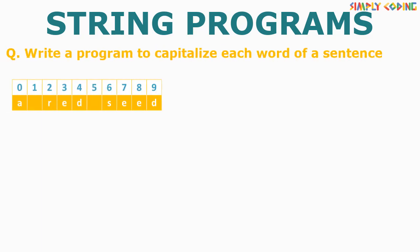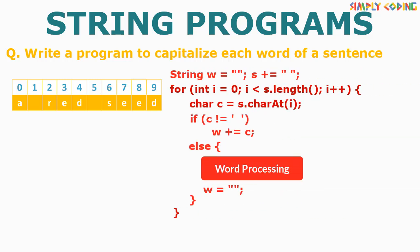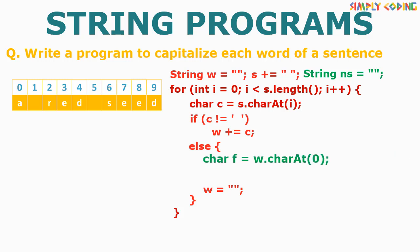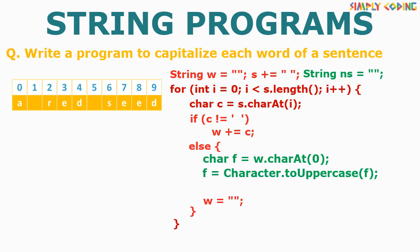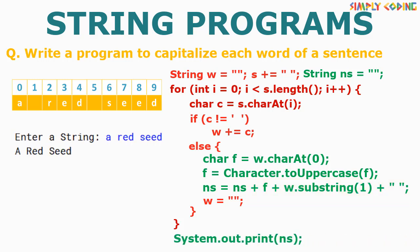The next program is to capitalize each word of the sentence. Here again we will take our template. We will declare a string variable before the loop. Inside the loop, we will first extract the first character of the word by using charAt(0) and convert it to uppercase. Then we will use the substring function to get the remaining part of the string. We will concatenate these two to get a capitalized word and add it to the new sentence along with a space. Once out of the loop, we print this new sentence. This gives us the program to capitalize each word.